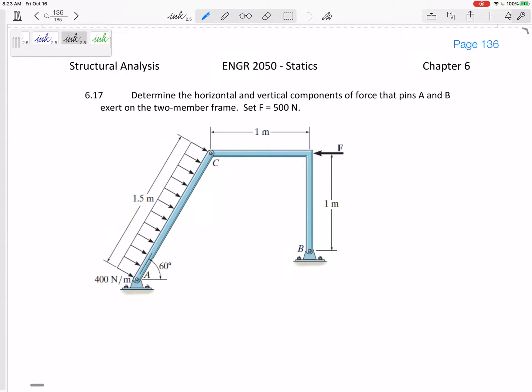All right, so let's look at another one. This is gonna be a little bit easier than the last one, but similar thing here. We've got this frame, we've got this force of 500 Newtons, and we want to find the horizontal vertical components of pins at A and B.